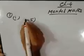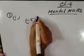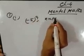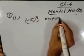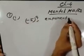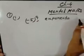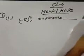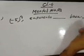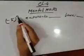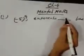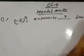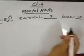Minus 5 to the power 9 — what is the exponent and what is the base? The exponent is 9 and the base is minus 5. So that is your answer.